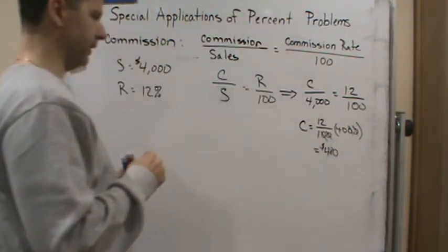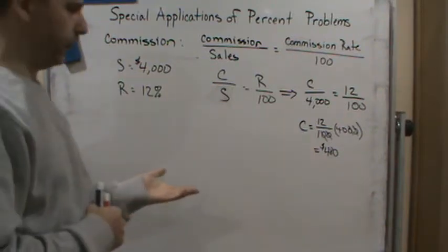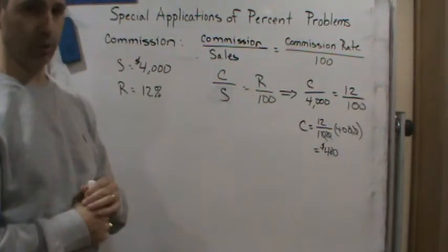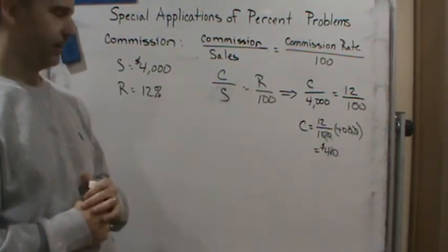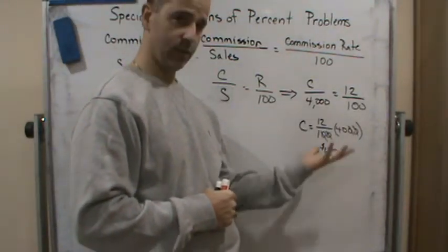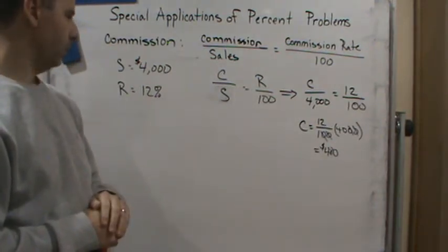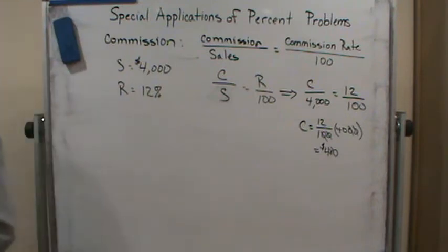That's the answer — $480 is my commission. If you're an independent contractor, you'd just get paid that as your gross and pay taxes at the end of the year. If you're a regular employee, taxes would be taken out. But $480 is the answer.